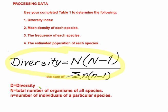For the diversity index, the formula is: D = N(N−1) / Σn(n−1), where N is the total number of all individuals of all species and n is the number of individuals of each species. Simpson's Diversity Index is a composite value created from both the variety of species and the population size of each type, together giving you the diversity.